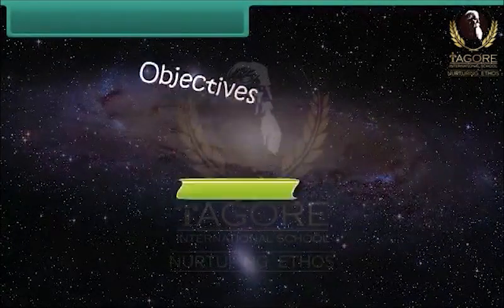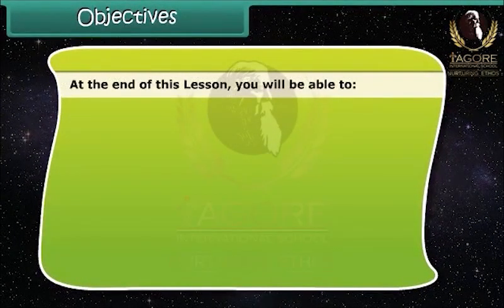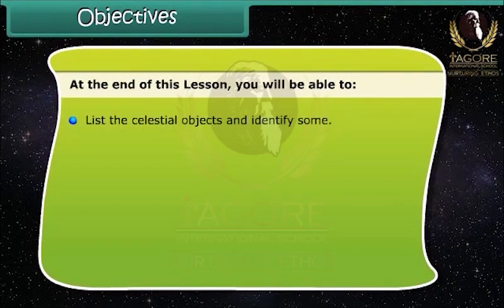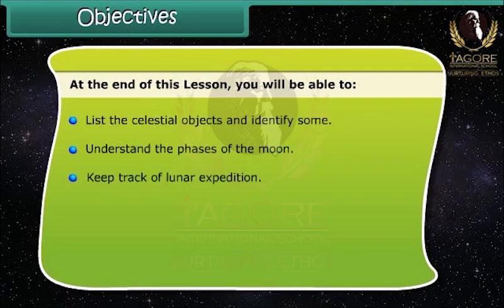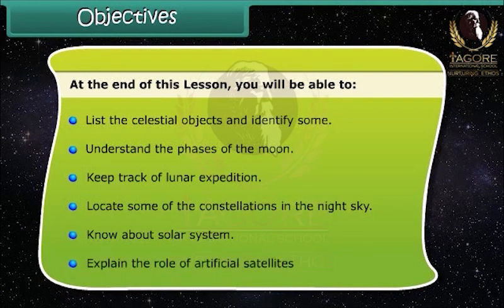At the end of this lesson, you will be able to: list the celestial objects and identify some; understand the phases of the Moon; keep track of Lunar Expedition; locate some of the constellations in the night sky; know about the Solar System; and explain the role of Artificial Satellites.